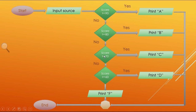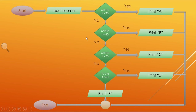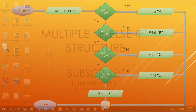If a person scored 70 or above, the first condition is false, the second is also false, it comes to the third condition which becomes true and prints grade C, then terminates. If a person scored 60 or above, it skips the earlier conditions and this condition becomes true — it prints grade D and terminates. If a person scored below 60, all conditions above are skipped and the else statement executes by default, printing grade F, and then the program terminates.